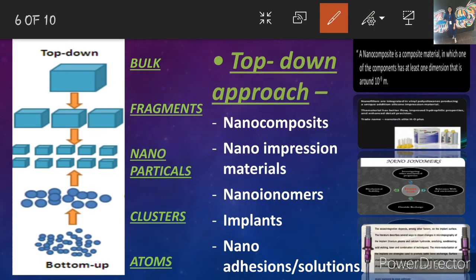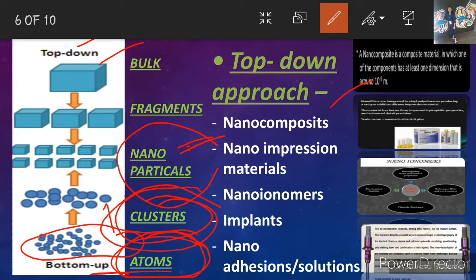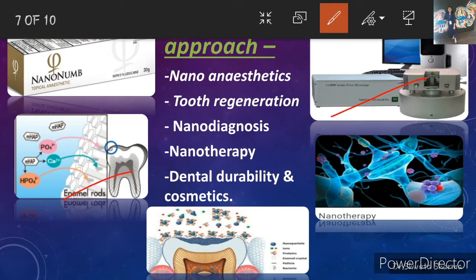The bottom-up approach is just the opposite of the top-down approach. Particles which are very very small compared to the nano range — these atoms combine with each other to form clusters, and these clusters also combine with each other to form nanoparticle-range structures. So in the top-down approach we use particles larger than nano range, while in the bottom-up approach we use particles smaller than nano range, combining atoms into clusters and clusters into nanoparticles. Examples formed by the bottom-up approach include nano anesthetics, tooth regeneration, nanotherapy, and dental durability and cosmetics.